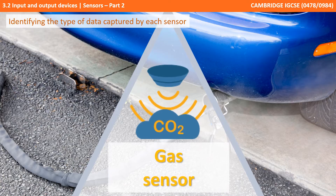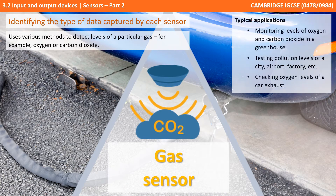Next up are gas sensors. These use various methods to detect levels of a particular given gas, for example oxygen or carbon dioxide. They can monitor levels of oxygen and CO2 in a greenhouse, monitor pollution levels above a city, an airport or a factory, and monitor the amount of oxygen levels in a car's exhaust.